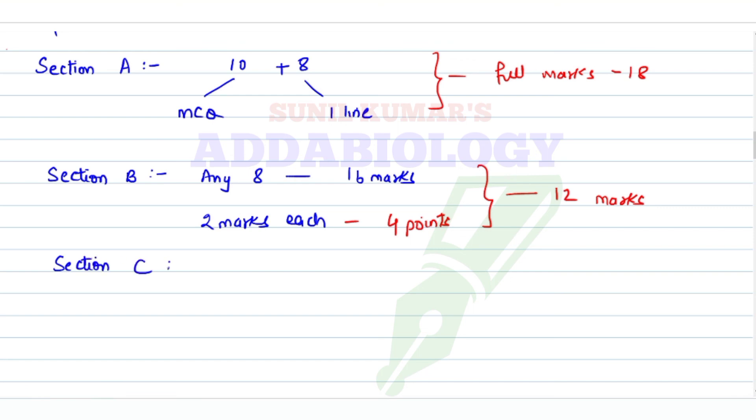Then we have Section C. Section C says any 8 you have to attempt, it is for 24 marks. Again, it's 3 marks each, so 3 marks means how many points? I can say 10 to 12 points. And if you're not writing 10 to 12 points, at least draw a diagram. Out of 24, try to score 20 marks.